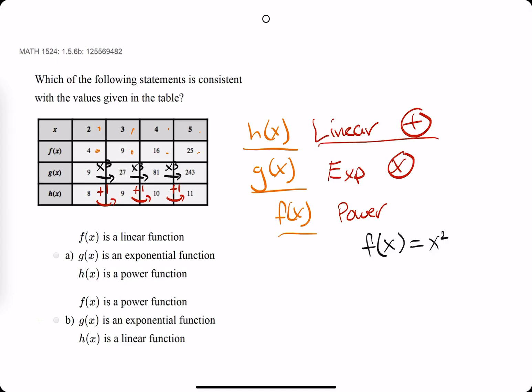that should leave us with, so h is linear. That's looking like option b. So we bring out our eraser. Find out that b is the correct answer.